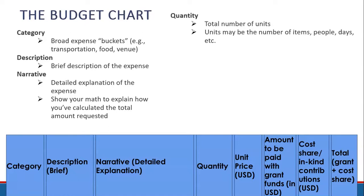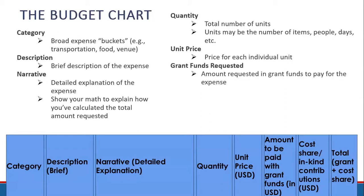Quantity: here you indicate the total number of units for your requested expense. Units may be the number of items, people, days, etc. — there are many different possible units. Unit price: this is the price for each individual unit. Grant funds requested: this is the amount you are requesting in grant funds to pay for this expense.